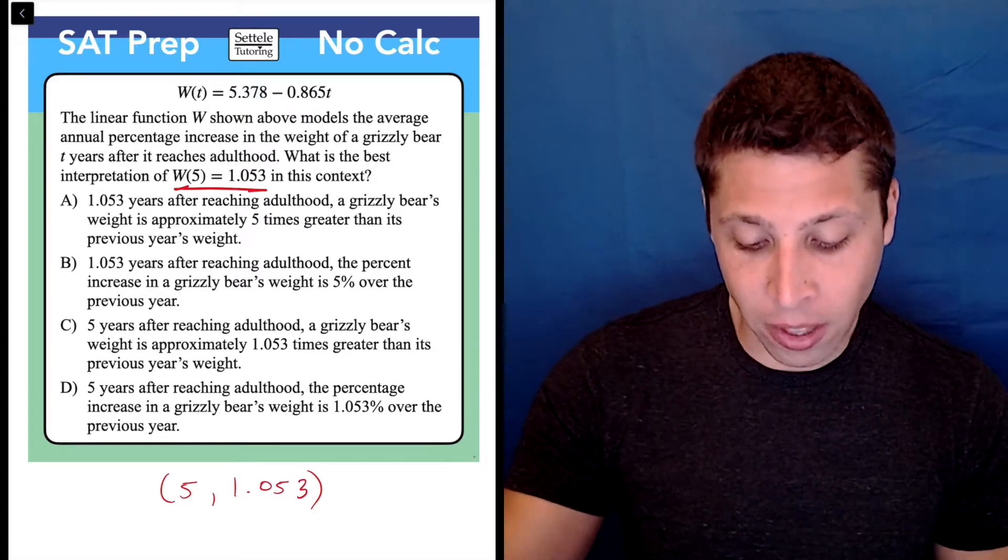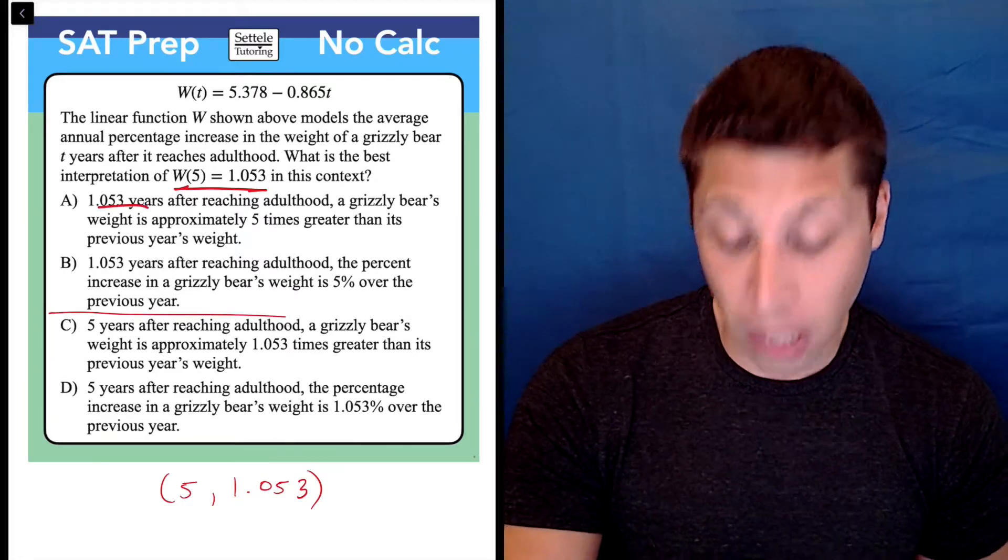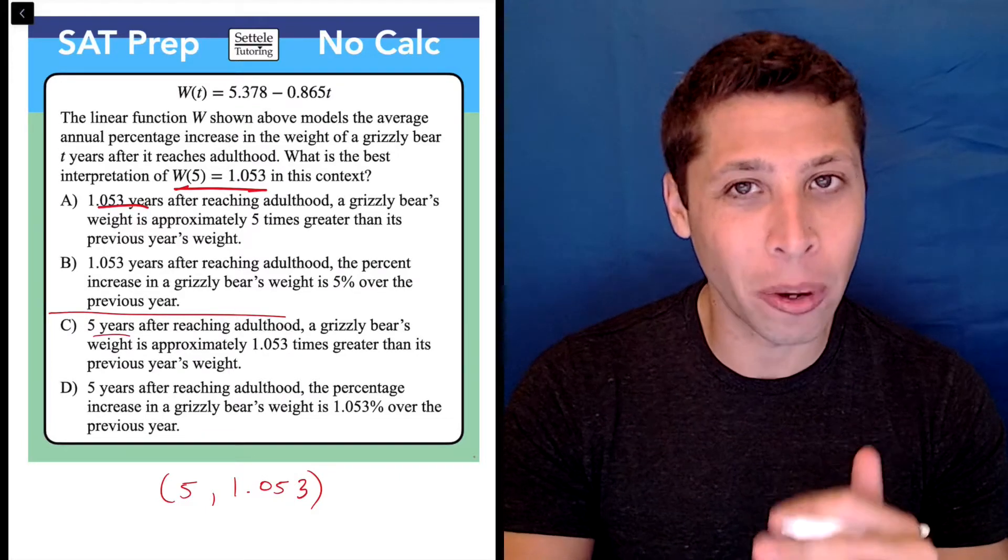We can see that are they, first of all, talking about 1.053 as the number of years or 5 as the number of years? Well, we can get that without much understanding of what's going on.